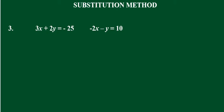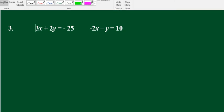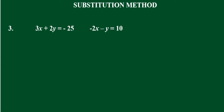We are solving linear equations in two variables using the substitution method and the graphical method. With the graphical method, we look at where the lines intersect. For the substitution method, we do some simple algebra — we substitute values to find the x value and read the answer.